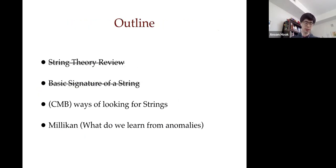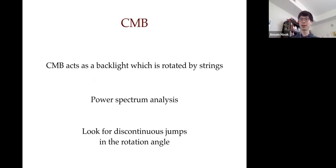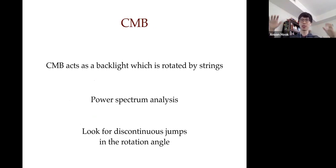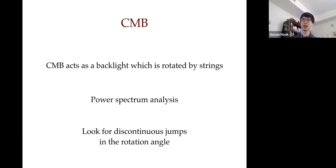Given our Aharonov-Bohm signature, let's look for it. The CMB is ideal because it's a backlight of the universe, constantly shining light from a huge distance away. We observe all the little wiggles as it passes by galaxies and gravitational effects on its way to us. If there are strings anywhere between us and the CMB, those photons would have passed by the strings and acquired a rotation angle.